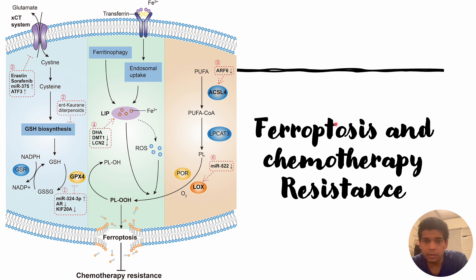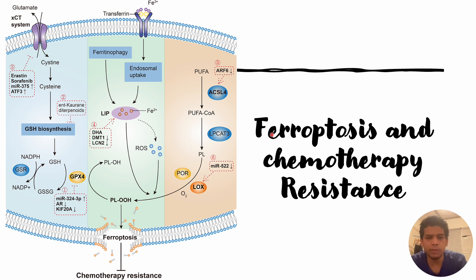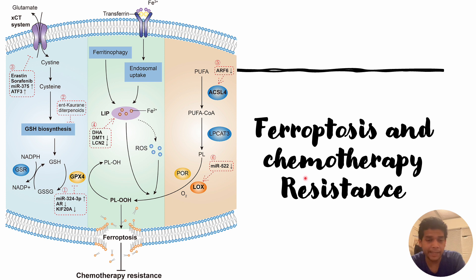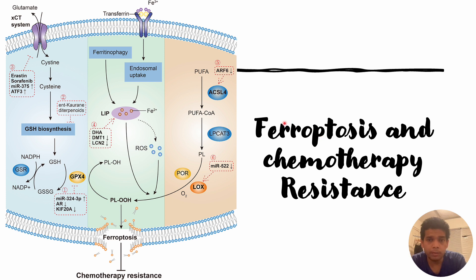In this video we will continue our discussion about ferroptosis and chemotherapy resistance. We have previously discussed how ferroptosis can help in tumor cell death. Here we will discuss that even though some tumor cells — such as pancreatic cancers or other solid tumors — are resistant to chemotherapy, ferroptosis inhibitors can be used to trigger ferroptosis in those resistant cells.